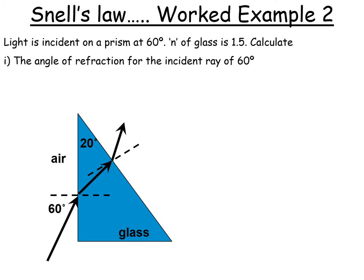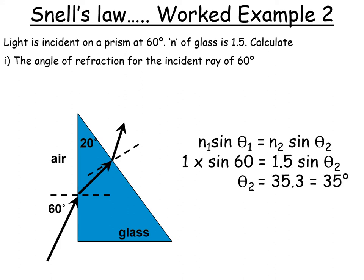To get that, it's fairly straightforward because here theta 1 is just 60 and we want theta 2. So remember our equation, n1 sine theta 1, n2 sine theta 2. The refractive index of air is 1, so it's multiplied by sine 60. And the refractive index of glass is 1.5. And we want the angle within the glass, so that's why it's theta 2. If we work that out, we get 35.3, which is rounded to 35 degrees.